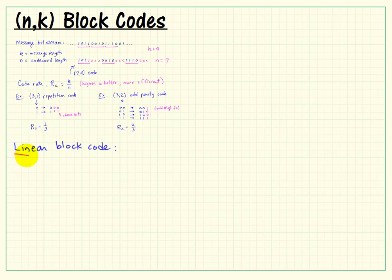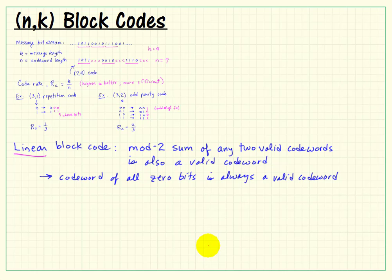Now an important subclass of block codes is linear block codes. And the definition says that the mod 2 sum of any two valid codewords is also a valid codeword. An important consequence of that is that the codeword that contains all zeros is always a valid codeword.